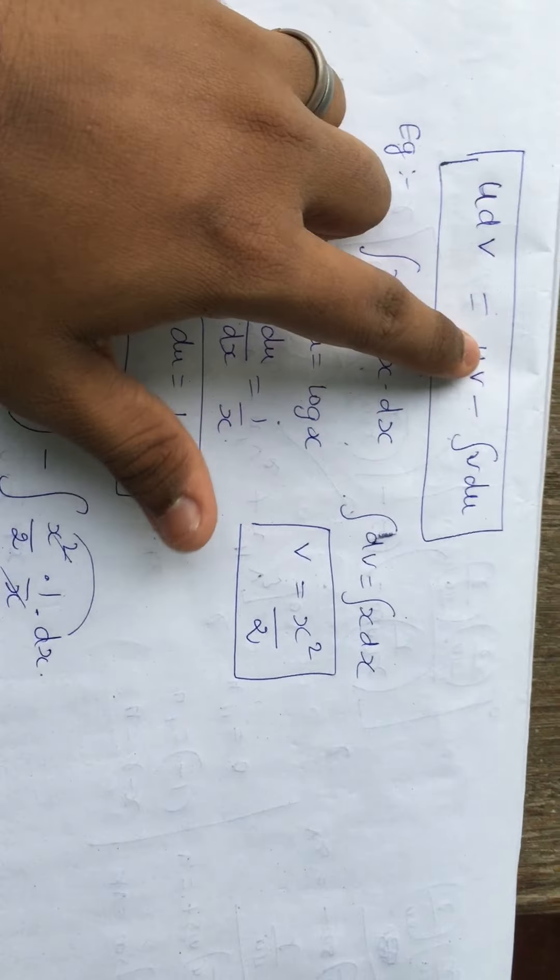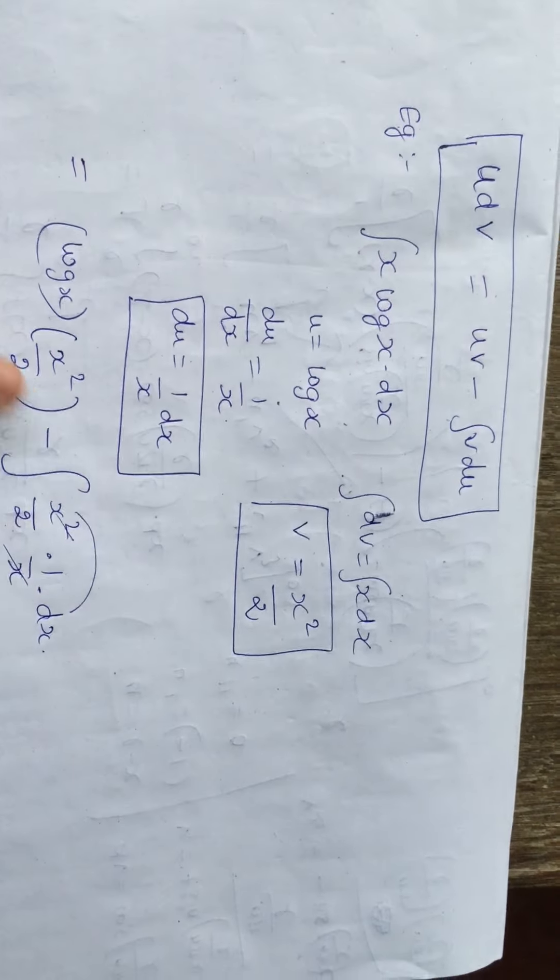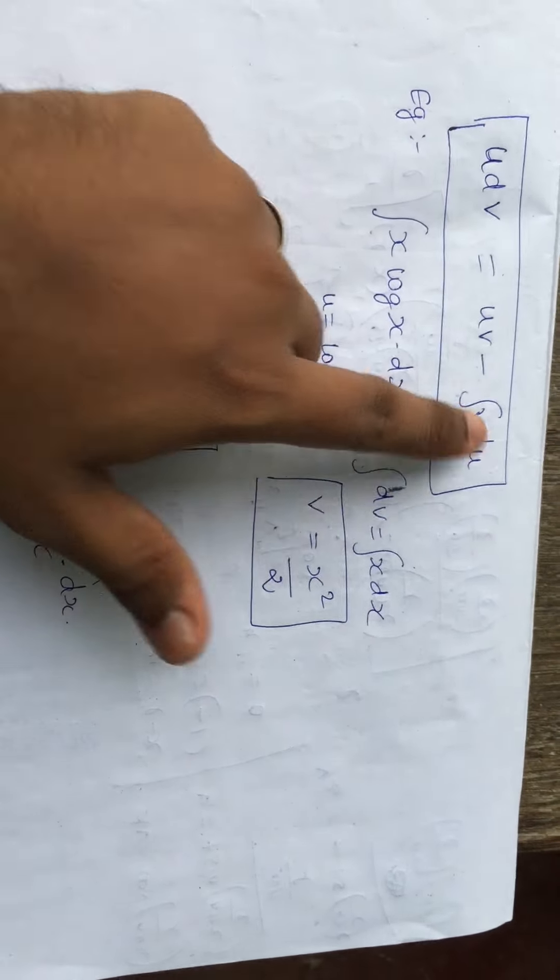Then I apply this formula. If u is equal to log x and v is x squared by 2, we get: v is x squared by 2 minus integral of v which is x squared by 2, times du which is 1 by x dx.